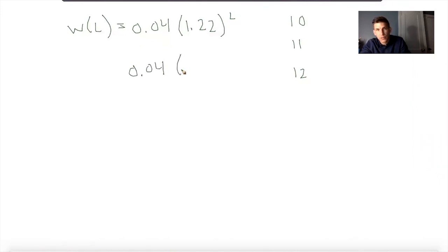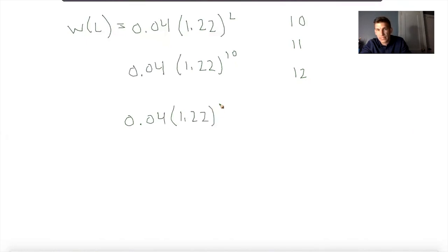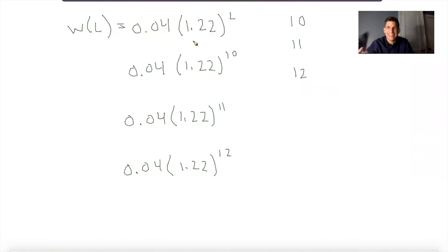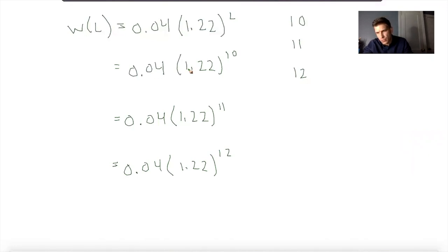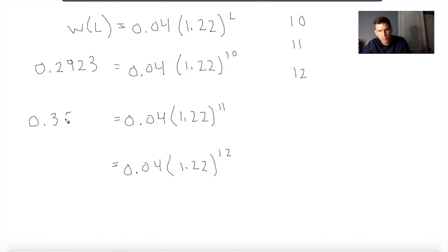I'm going to do 0.04 times 1.22 to the 10th power, then 0.04 times 1.22 to the 11th power, then 0.04 times 1.22 to the 12th power. I'm choosing this strategy because of the wording, my understanding of units, and because I'm going to use a calculator. Otherwise I wouldn't be doing this — I'd be breaking it down more conceptually in a non-calculator section.